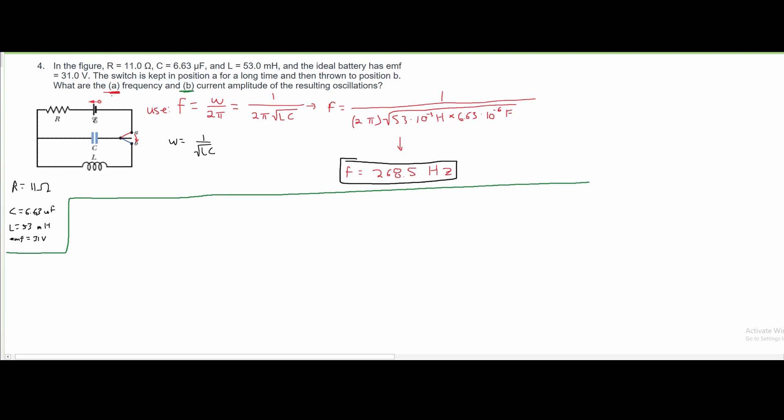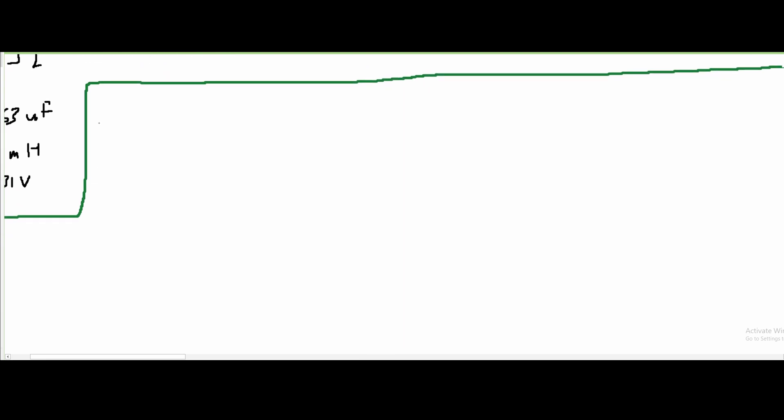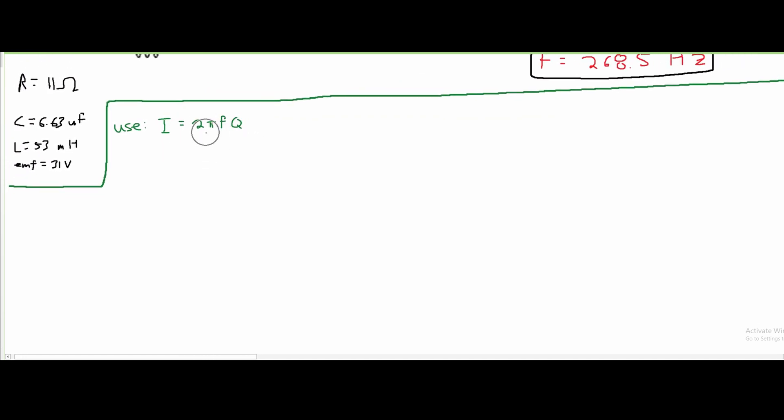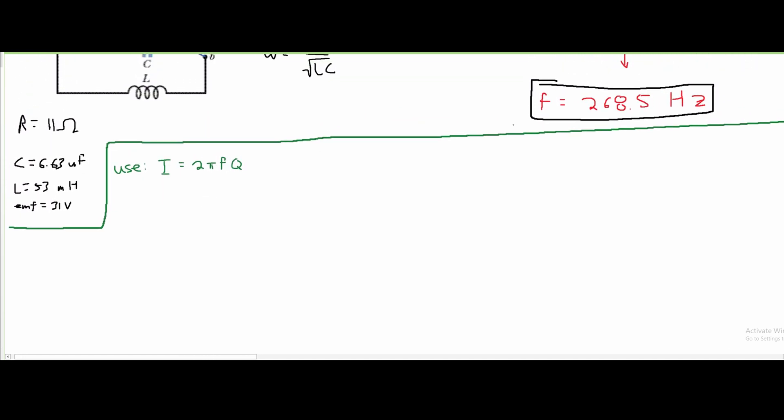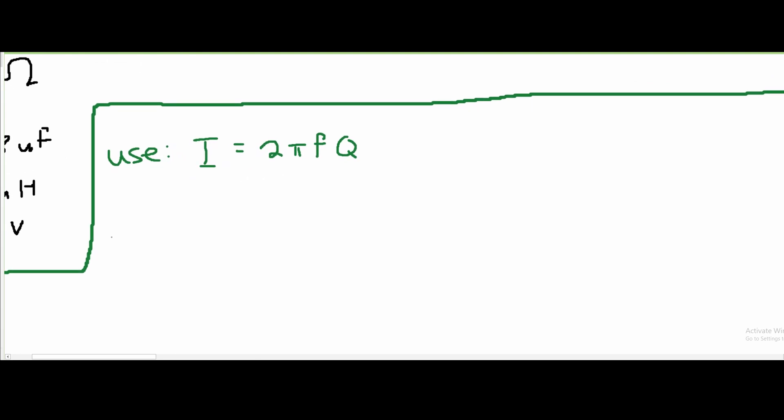For part B, we're asked to find the current amplitude of the resulting oscillations. To find the amplitude, we need to find I. To do this, we need to use the formula I equals 2 pi frequency times charge. Now, we found our frequency in part A, but we weren't given a Q. We weren't given a charge.